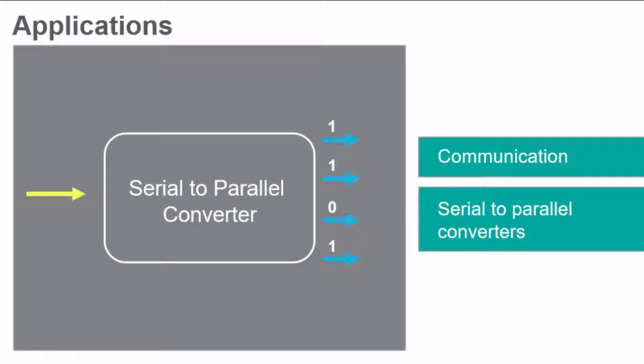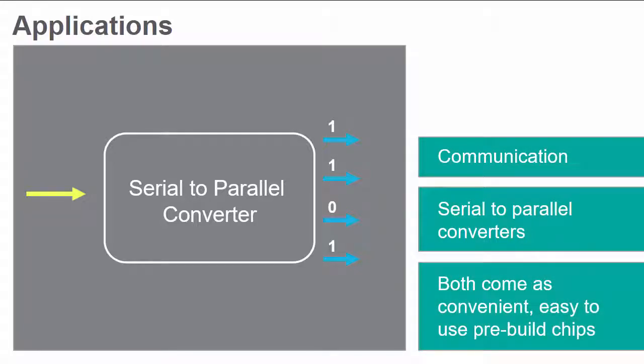In two-way communication, multiplexers are also used. Both multiplexers and demultiplexers come available as pre-built chips, which is a more convenient and efficient format than building them using logic gates.